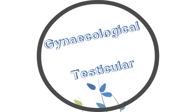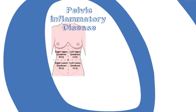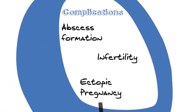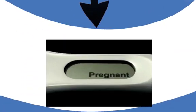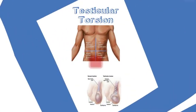In women, lower abdominal pain could be a gynaecological problem such as pelvic inflammatory disease — a general term for inflammation of the fallopian tubes, uterus and ovaries. It is often a complication of sexually transmitted infections such as chlamydia and gonorrhoea, and can result in complications such as infertility, abscess formation and ectopic pregnancy. For this reason, every woman of childbearing age with lower abdominal pain should have a pregnancy test.